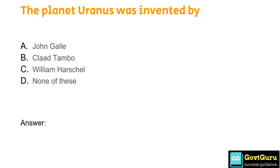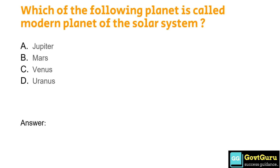The planet Uranus was discovered by: Option A: John Galley, Option B: Claude Tambo, Option C: William Herschel, Option D: None of these. The answer is Option C, William Herschel. Which of the following planets is called the modern planet of the solar system? Option A: Jupiter, Option B: Mars, Option C: Venus, Option D: Uranus. The answer is Option D, Uranus.